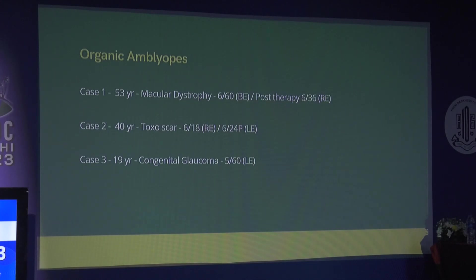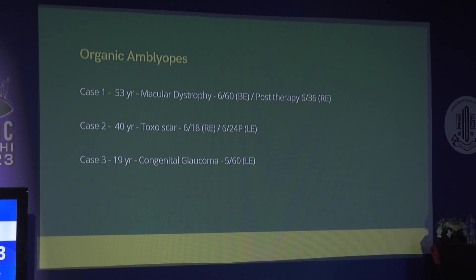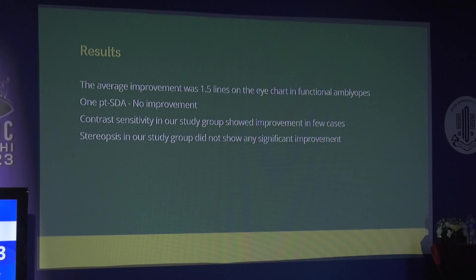A third case — a 19-year-old operated for congenital glaucoma soon after birth — is a one-eyed patient with 5/60 vision in the left eye. We tried Revital Vision, explained the pros and cons, and she continues on therapy. The limitation found is she cannot progress to the next difficulty level due to her reduced vision. In our study, functional amblyopes showed 1.5-line improvement on the eye chart; one patient with sensory deprivation amblyopia showed little improvement and we stopped therapy. Contrast sensitivity improved in some cases, but stereopsis did not show significant improvement with Revital Vision.